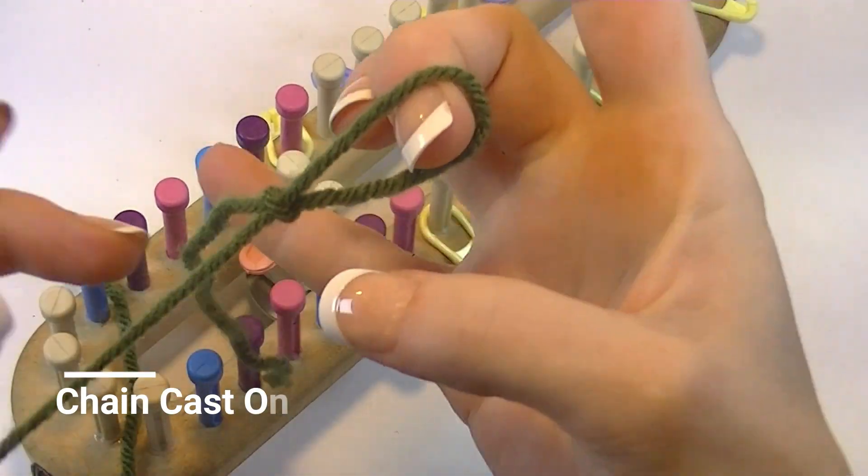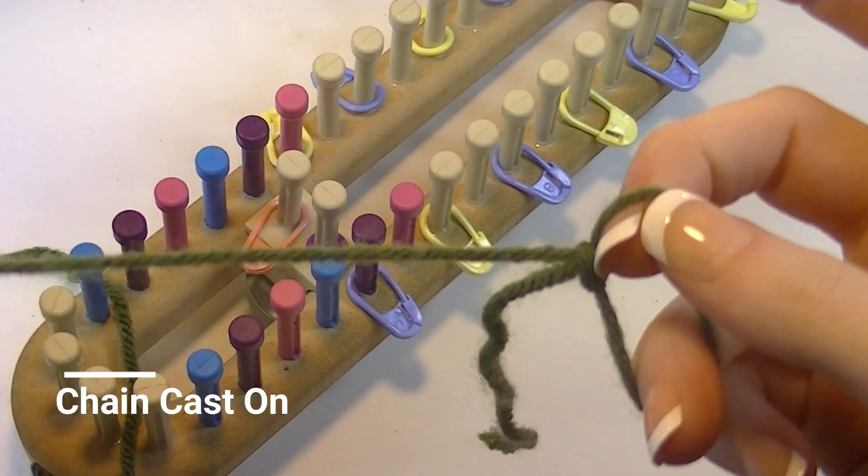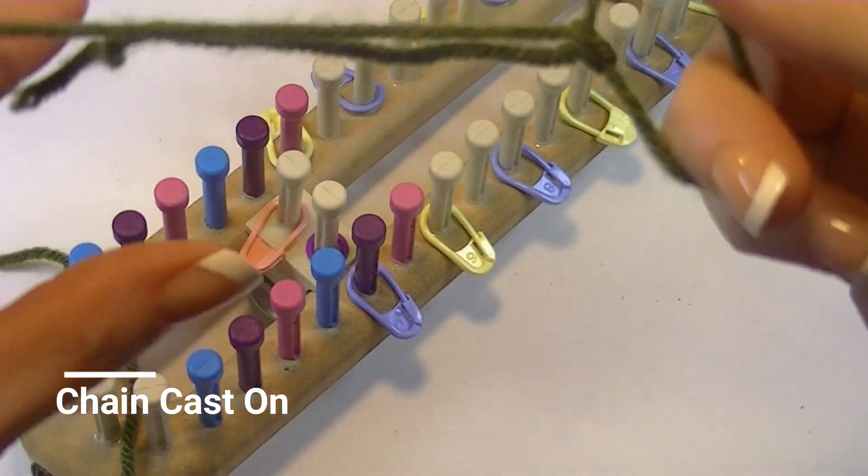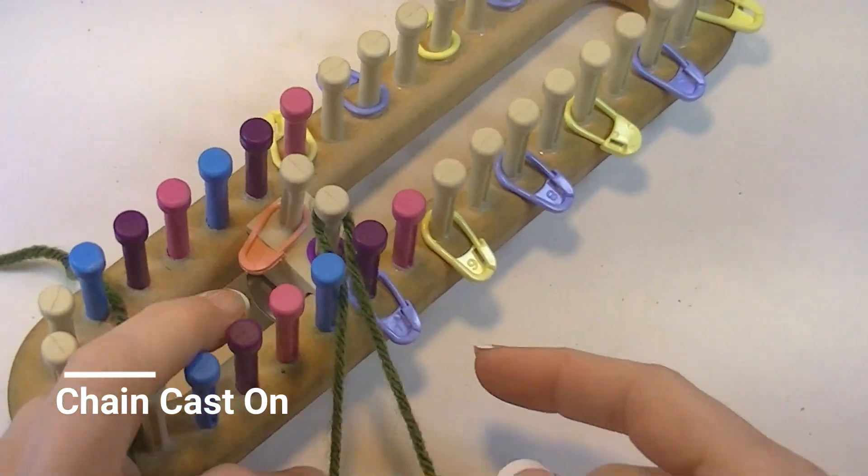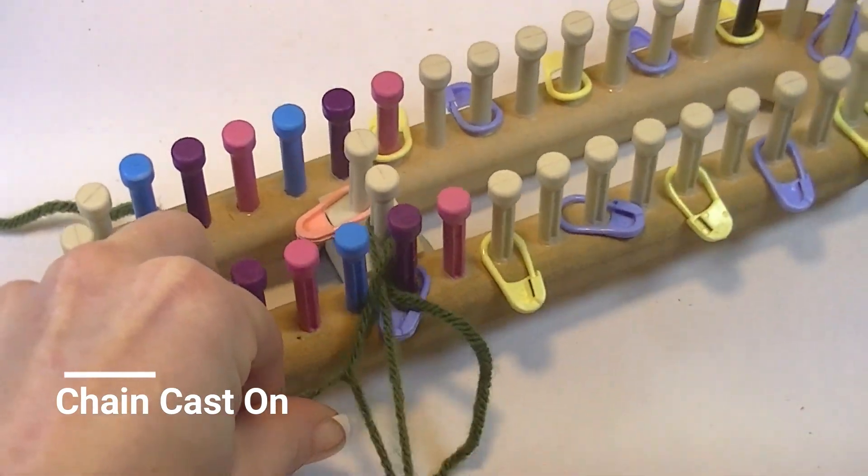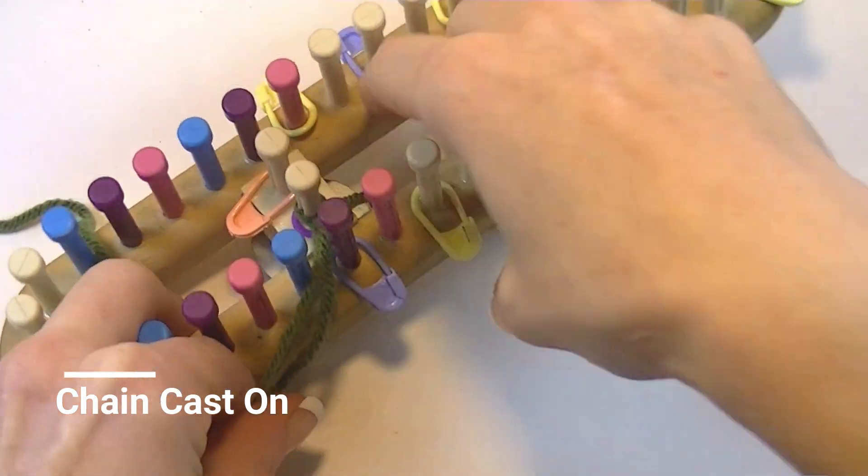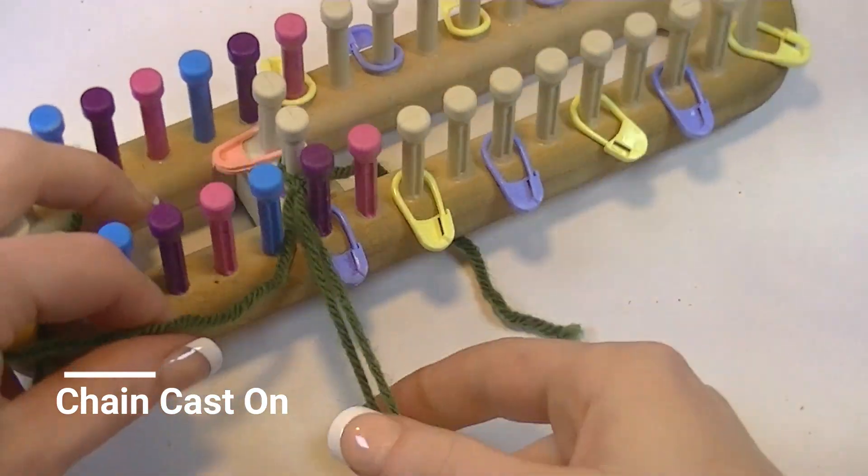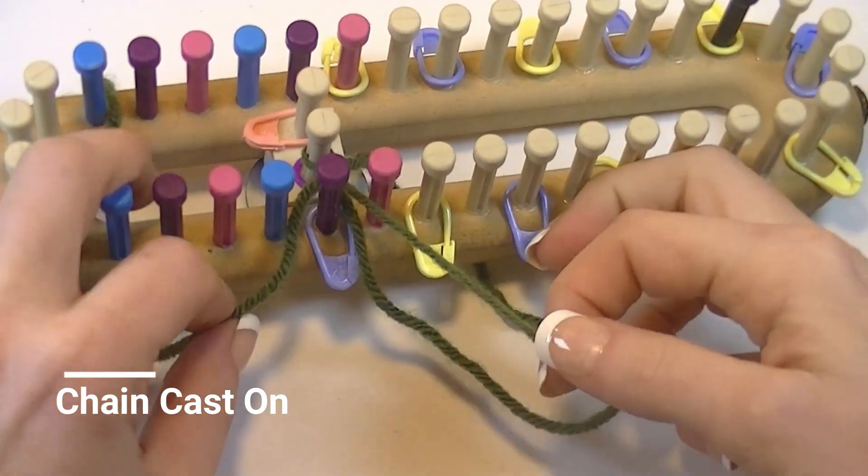For a chain cast on, we have a slip knot, and you want to make sure it's your working yarn that's slipping and not like your tail here. But you put the working yarn behind the peg, use this loop you created to tighten it up. This first one is really the most awkward, and then I like to put that string under, and you'll forget about that until later whenever you weave it in.